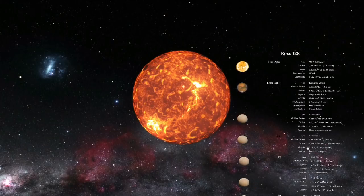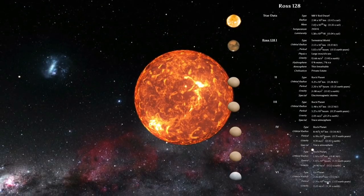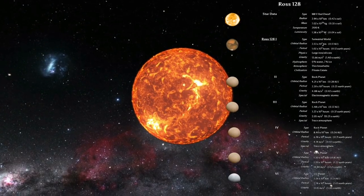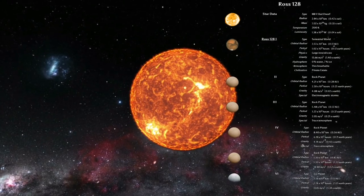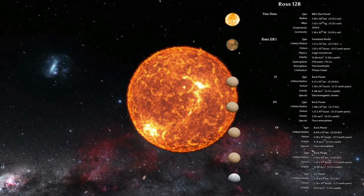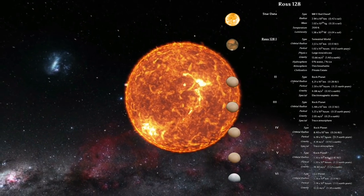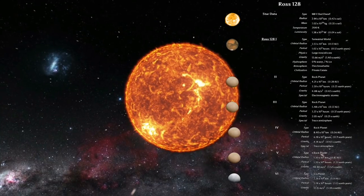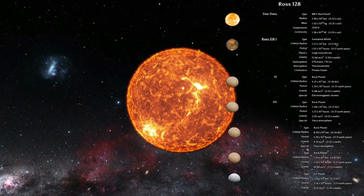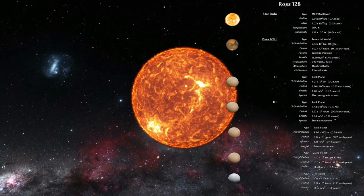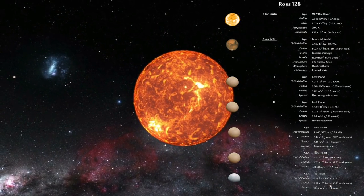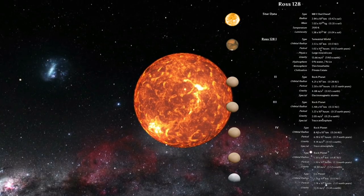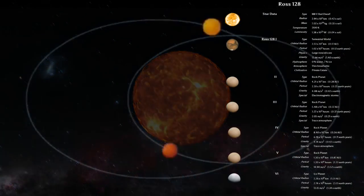Based on the fact that Ross 128 will be the star closest to our sun in 79,900 years, I calculated Ross 128's speed to be 14.6 miles per second. I then reached the conclusion that Ross 128 may be our sun's twin star, and its habitable planet Ross 128b may be the legendary Nibiru.